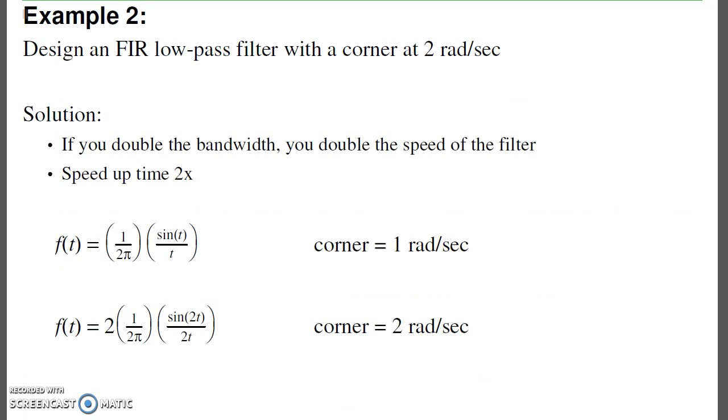Second example. Suppose I don't want a filter with a corner at one radian per second, but a corner at two radians per second. Here I don't really have to do a derivation. I actually have the answer. If I have double the bandwidth, my filter responds to frequencies that are twice as high, so it's twice as fast. So just do a change in variable. Speed up time by two times.